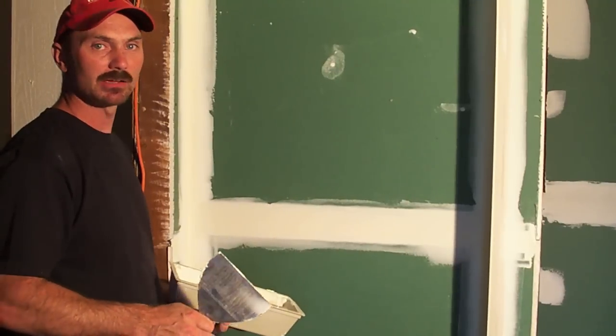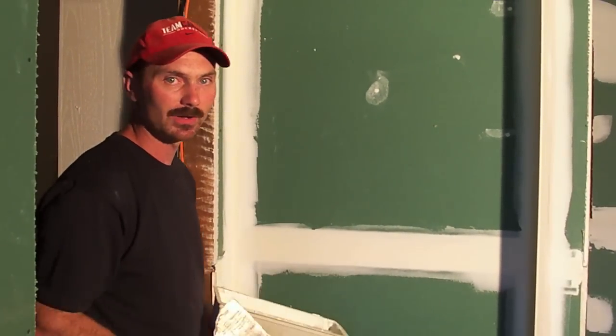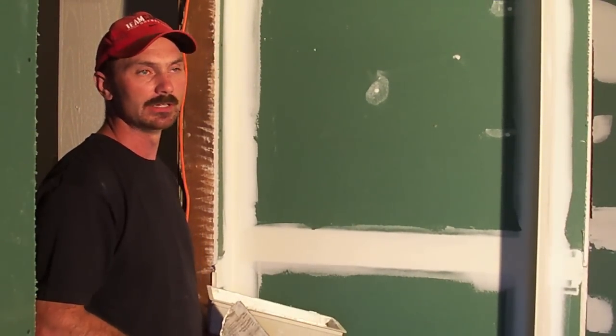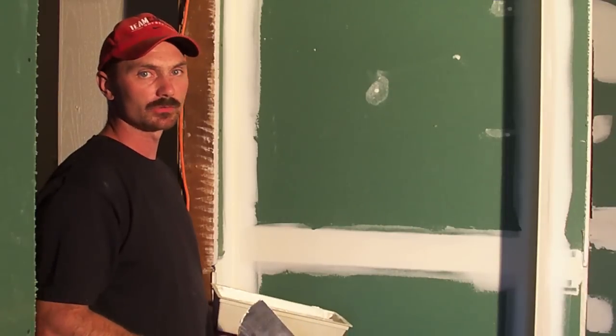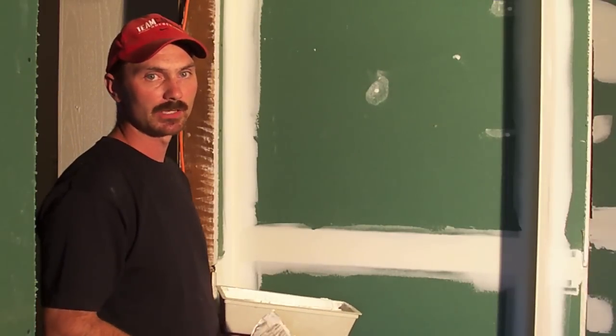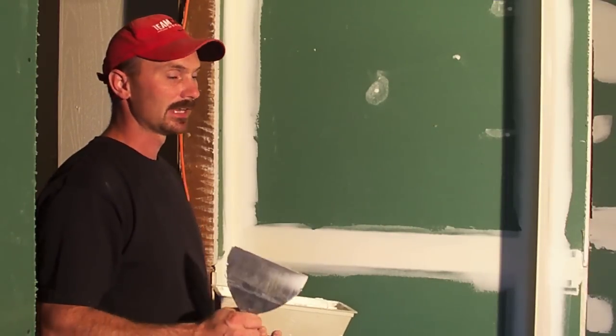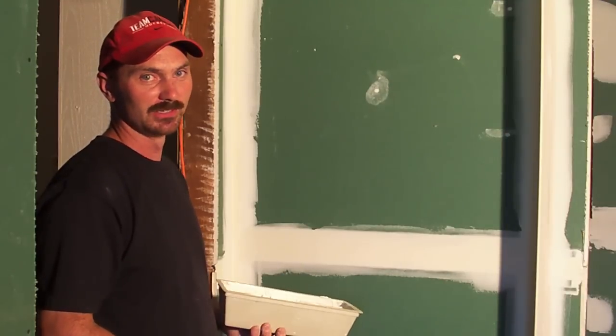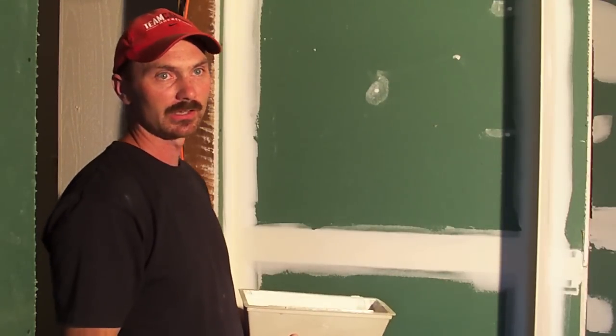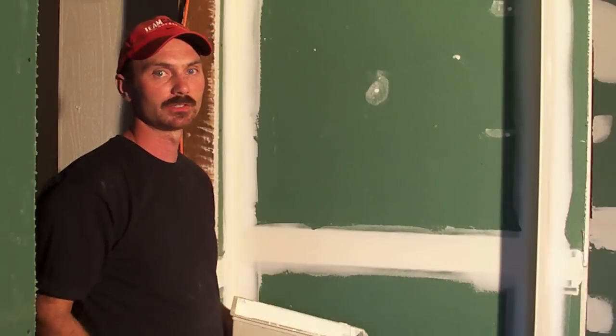It's always better in my mind to do four or five thin coats than two or three really heavy coats. If you do the heavy coats nine times out of ten, you're just going to end up spending a lot more time sanding, and as you're going to find out, sanding is the worst part of this whole job. So do your thin coats, it may take you a little longer but it's going to save you in the long run.